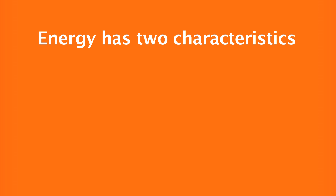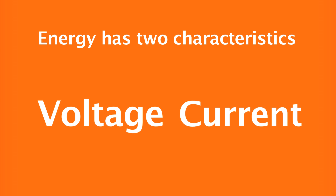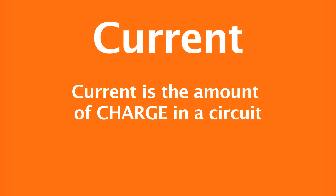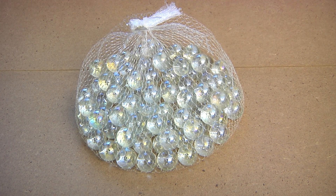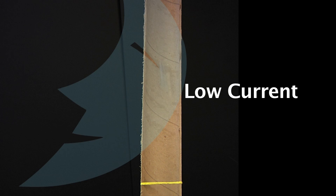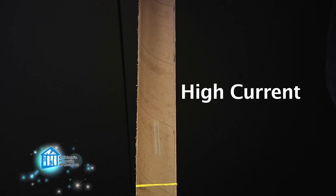Electric energy has two main characteristics: voltage and current, both of which relate back to charge. Let's start with current. Current is how much charge we have flowing through a circuit. To think of it another way, let's assume these marbles are charge. So right now we have a certain number of marbles rolling down this ramp per second — that's our current. But if we add in more charge, then our current increases.